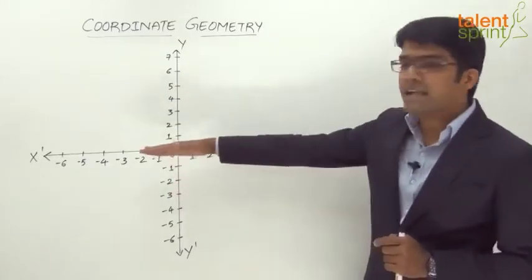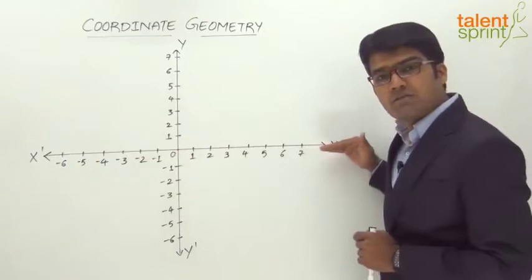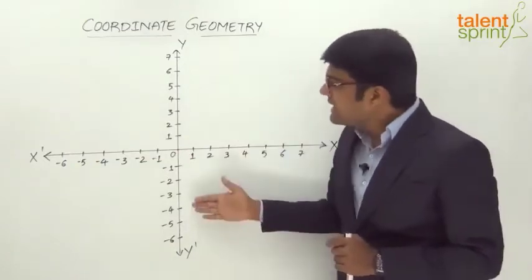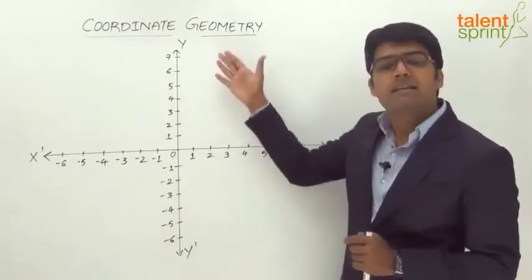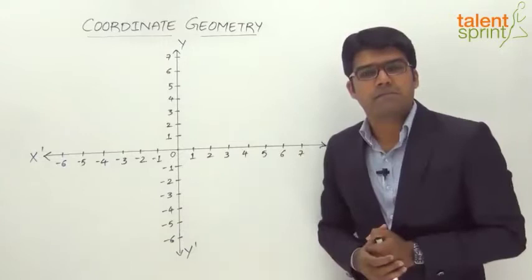The horizontal line indicates the horizontal direction of this plane and the vertical line indicates the vertical direction of the infinite plane.